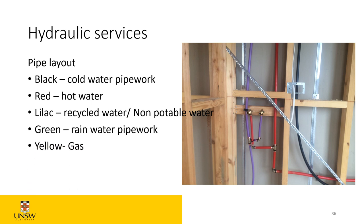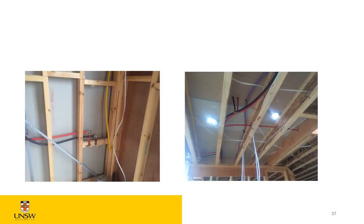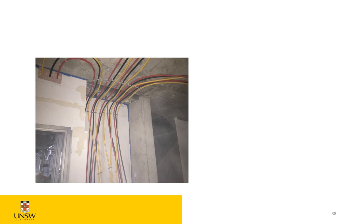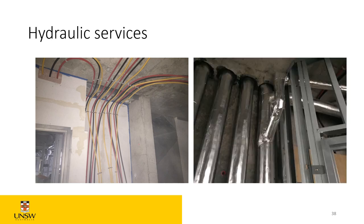Sewer pipes inside the building — put into the stack before closing off — are wrapped with insulation called acoustic lagging. This stops noise from carrying through the building when toilets flush or water runs through pipes. Photos show all these services running inside the ceiling, and cold and hot water inside a bathroom with AC drainage pipes connected.